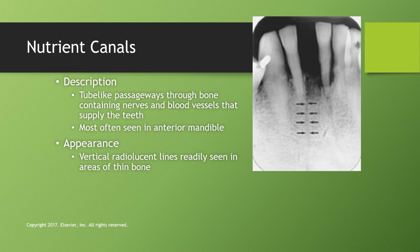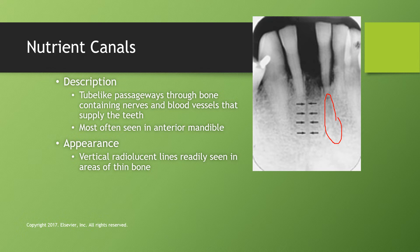Nutrient canals can be seen when you catch just the right angle. They are tube-like passageways through bone containing nerves and blood vessels that supply the teeth. Most often seen in the anterior sections, and more visible once a tooth has been extracted as blood and tissue slowly recede. The appearance is a vertical radiolucent line connecting the mandibular canal to the apex of the tooth.